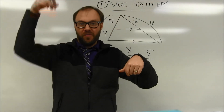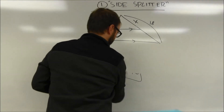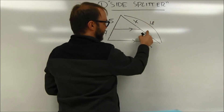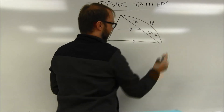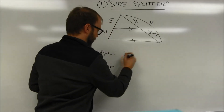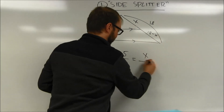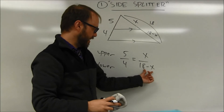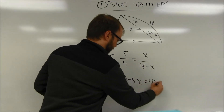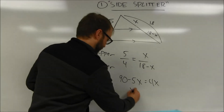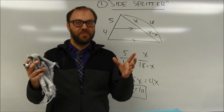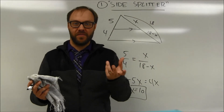If you prefer comparing upper over lower to upper over lower consistently, you can relabel. Call the whole side 18, the upper part x, and subtract to write the lower part as 18 minus x. Then set up 5 over 4 equals x over 18 minus x. Cross multiplying: 5 times 18 minus 5x equals 4x, giving 90 equals 9x, so x equals 10. You can add segments to represent a whole or subtract to express a part. There are lots of different possibilities with the side-splitter theorem.